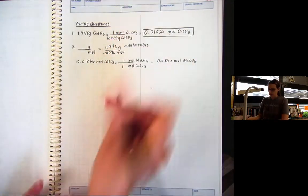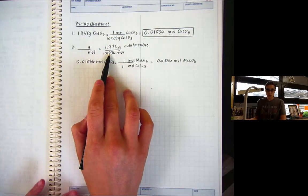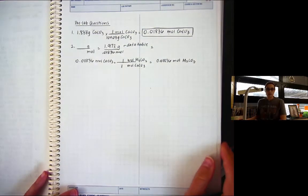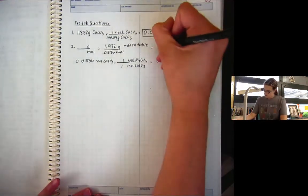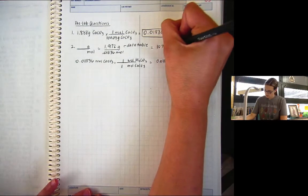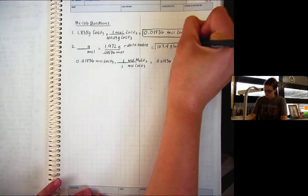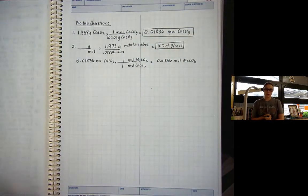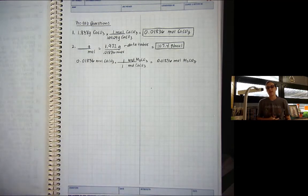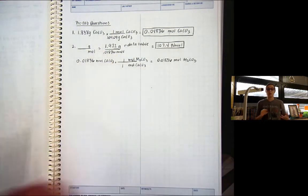There's how many moles of the metal carbonate we had. So I know how many grams of the unknown metal carbonate. I know how many moles of the unknown metal carbonate. So if I divide those, 107.4 grams per mole. There's our molar mass of our unknown. The whole point of this gravimetric analysis lab is to actually do this. These pre-lab questions are going to help with our post-lab questions.